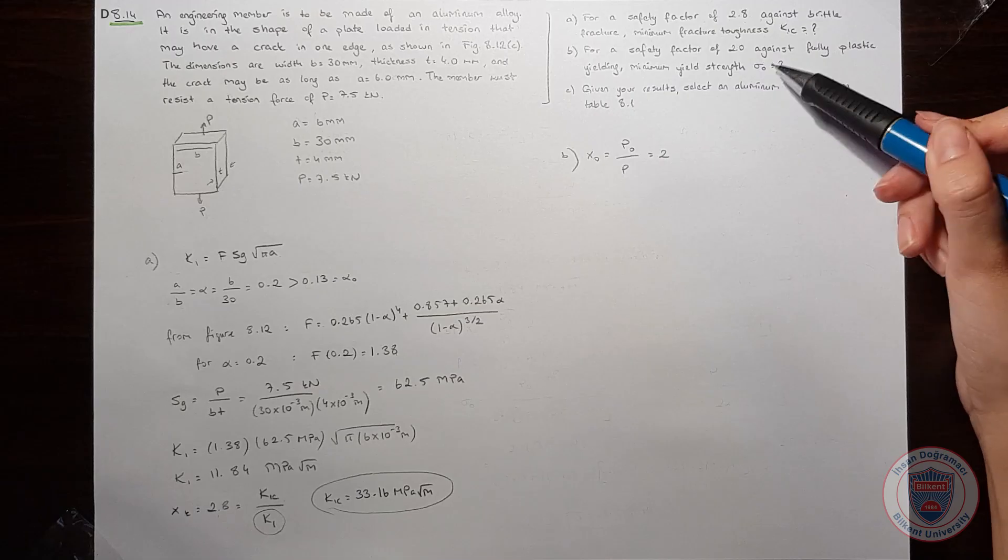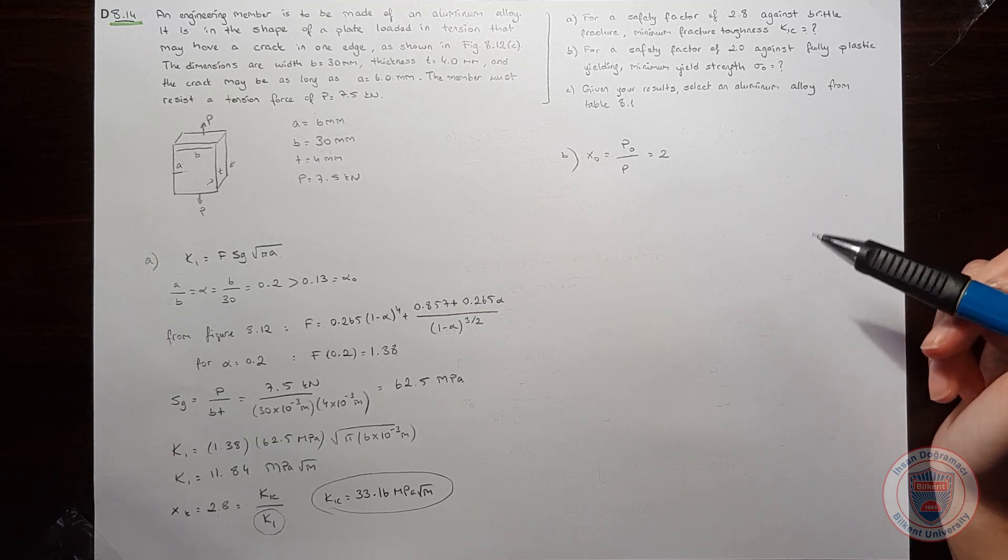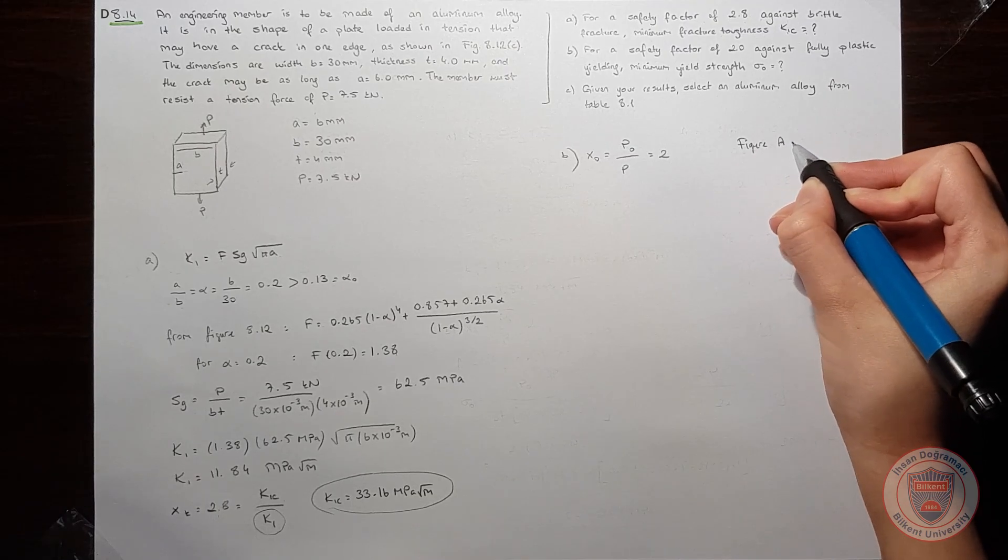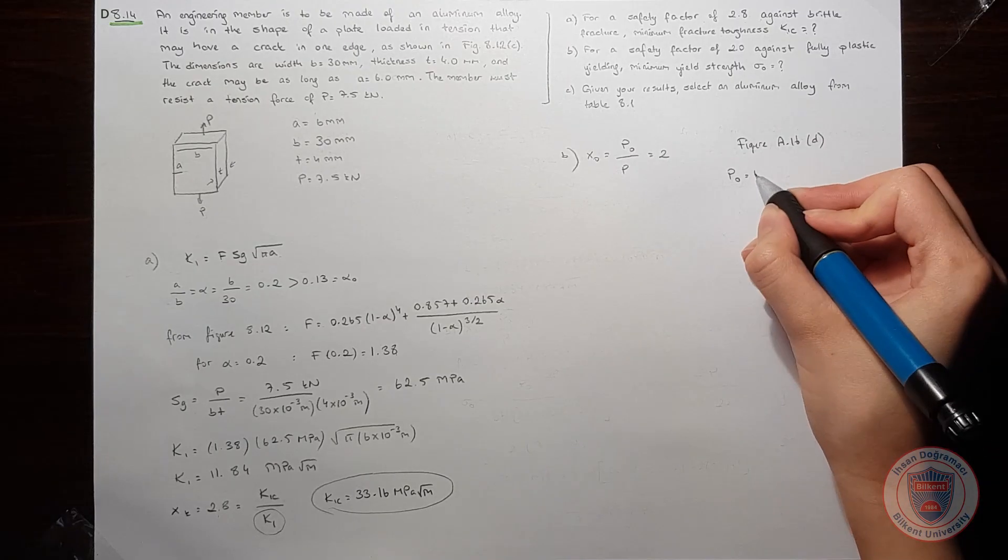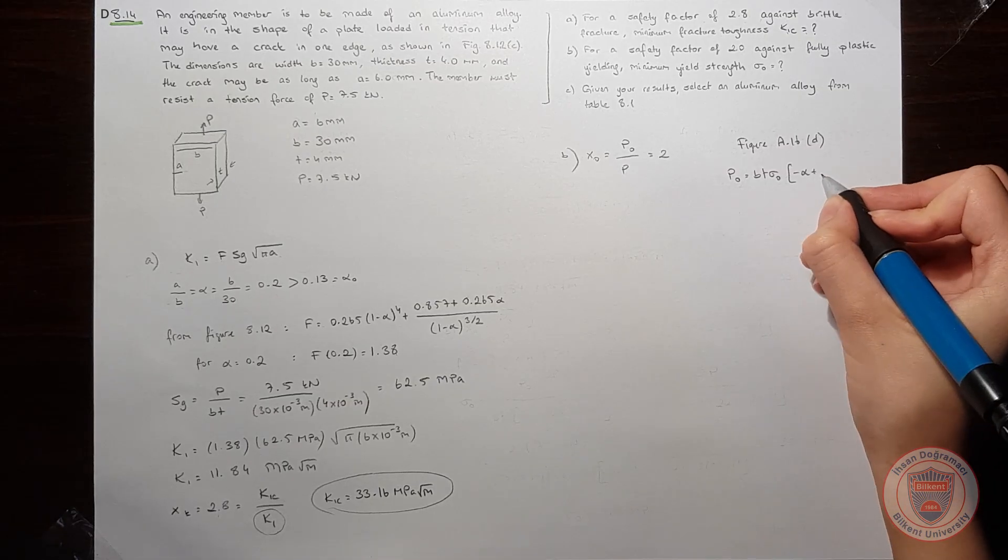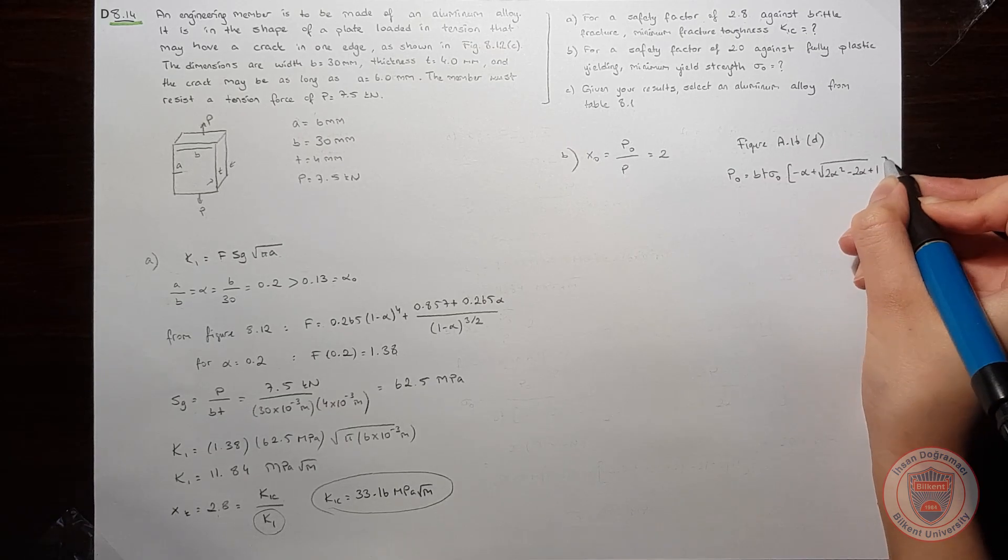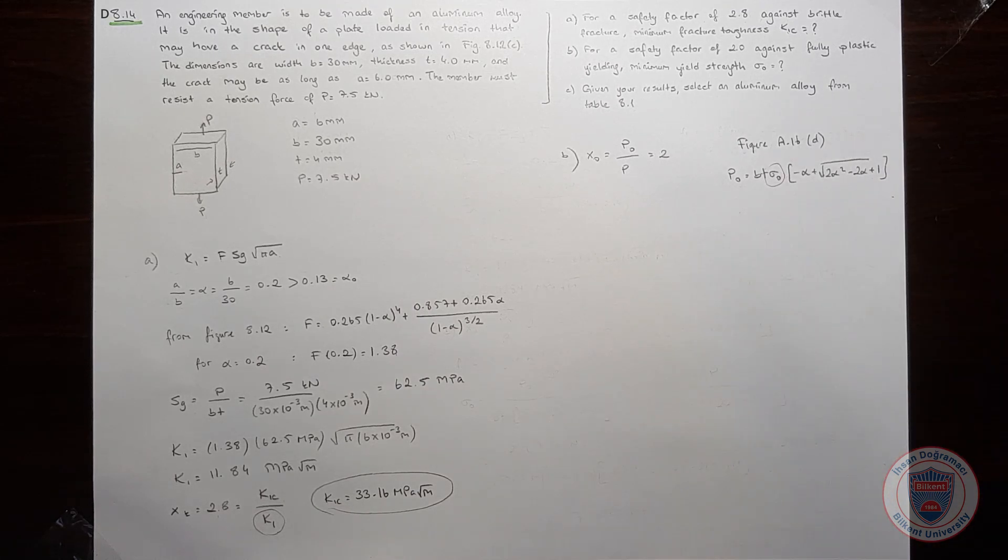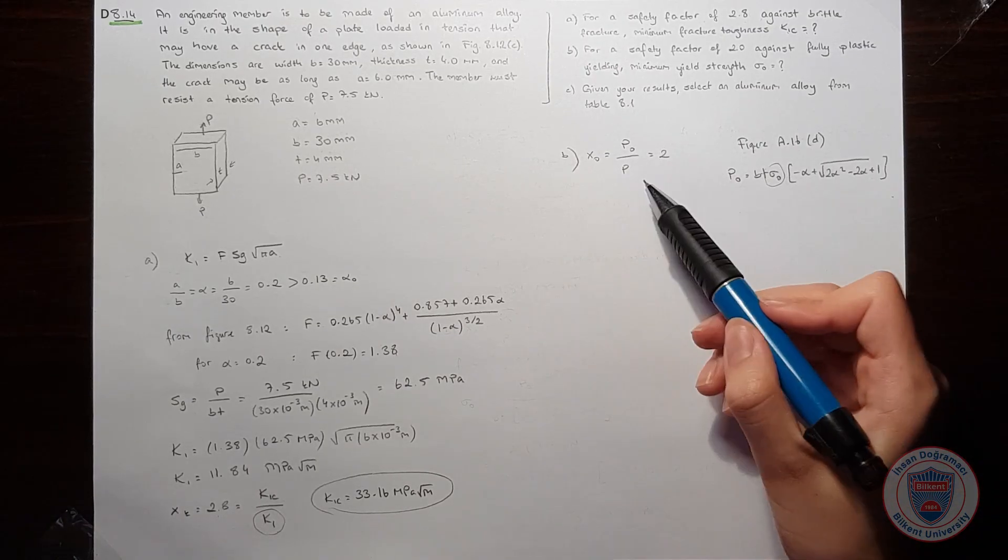And it wants us to find a minimum yield strength. When we look at the book in appendix A, we saw that in figure A.16 part D, p0 is BT times sigma_0 times a function of alpha. For the given shape.